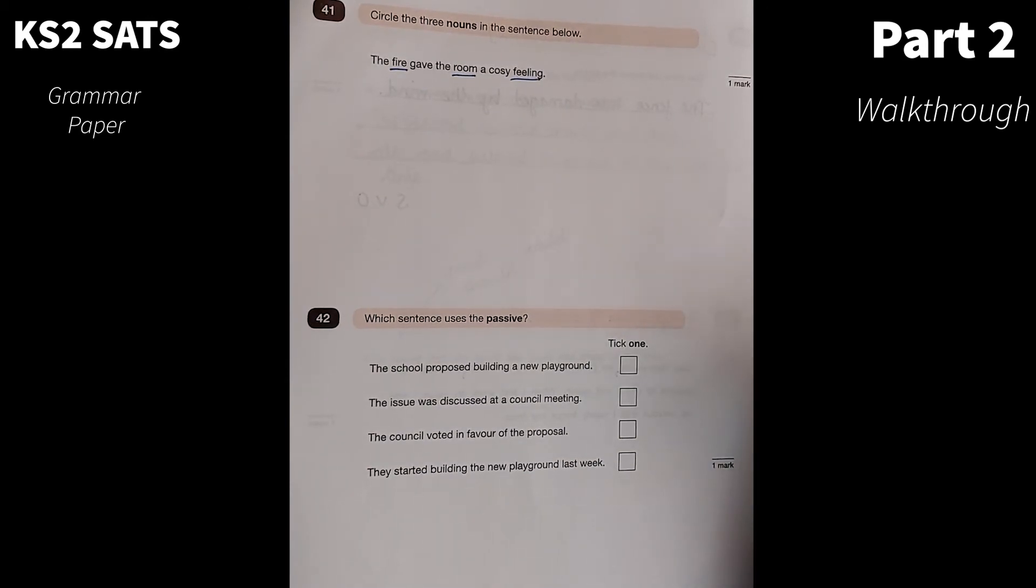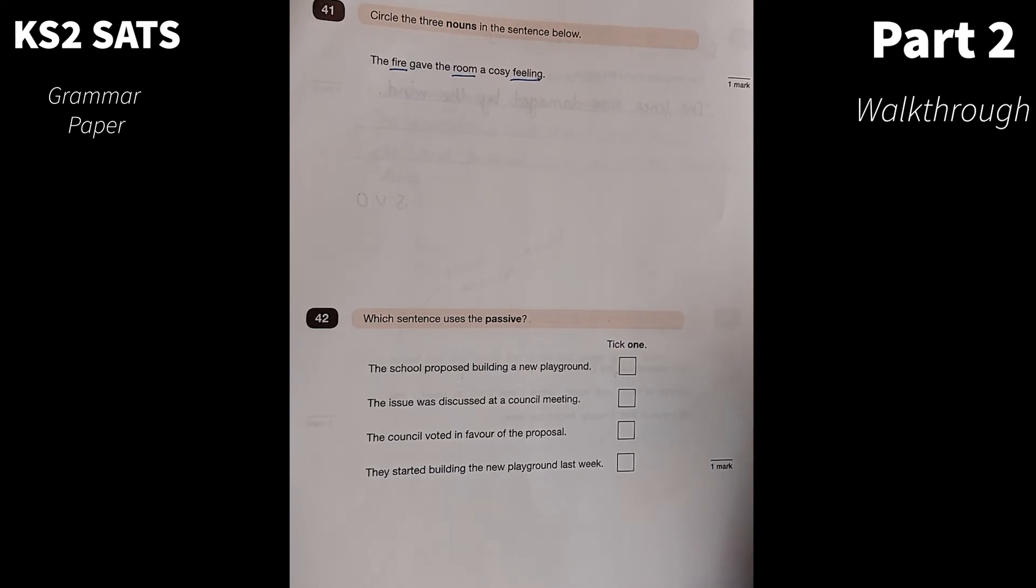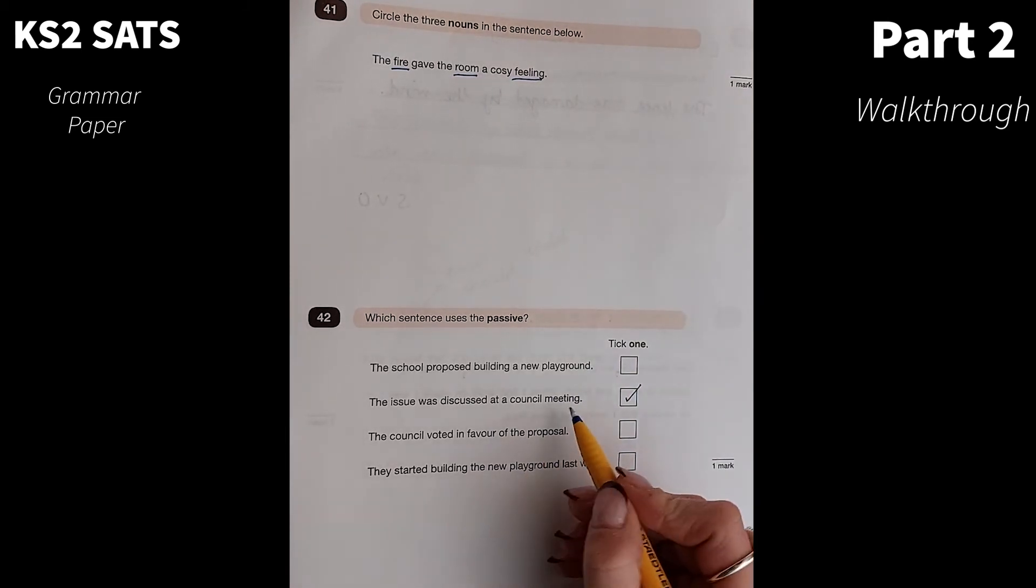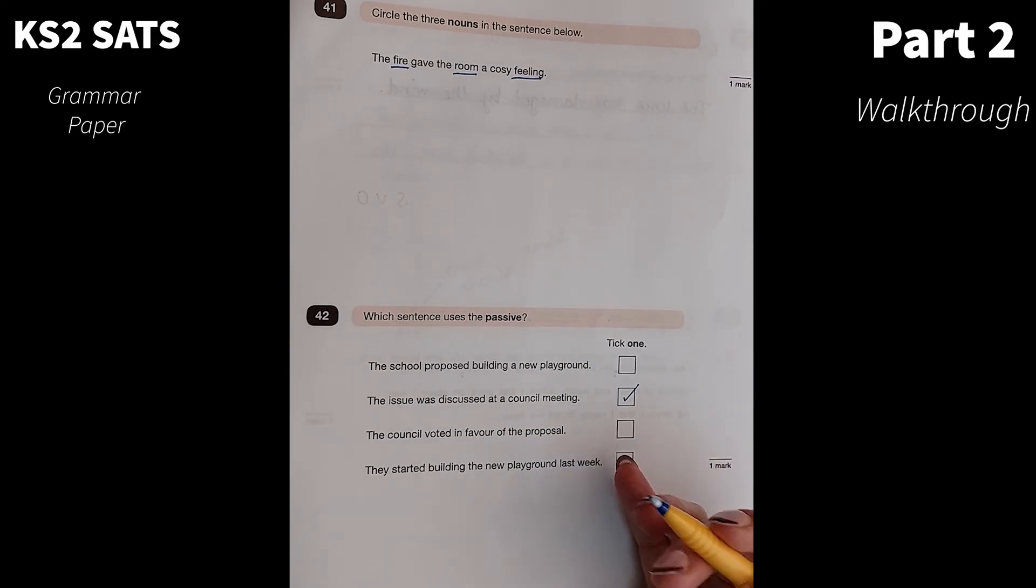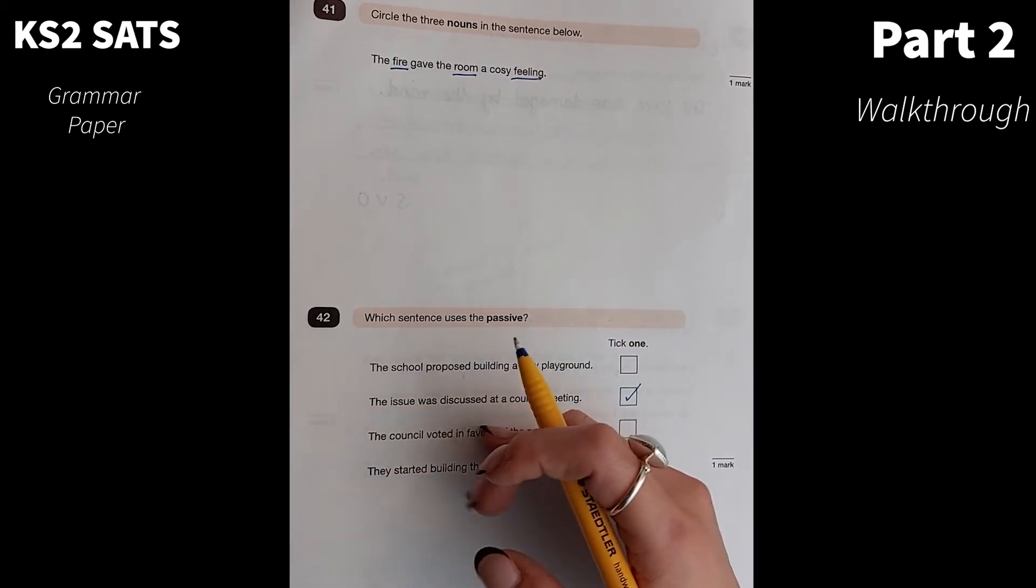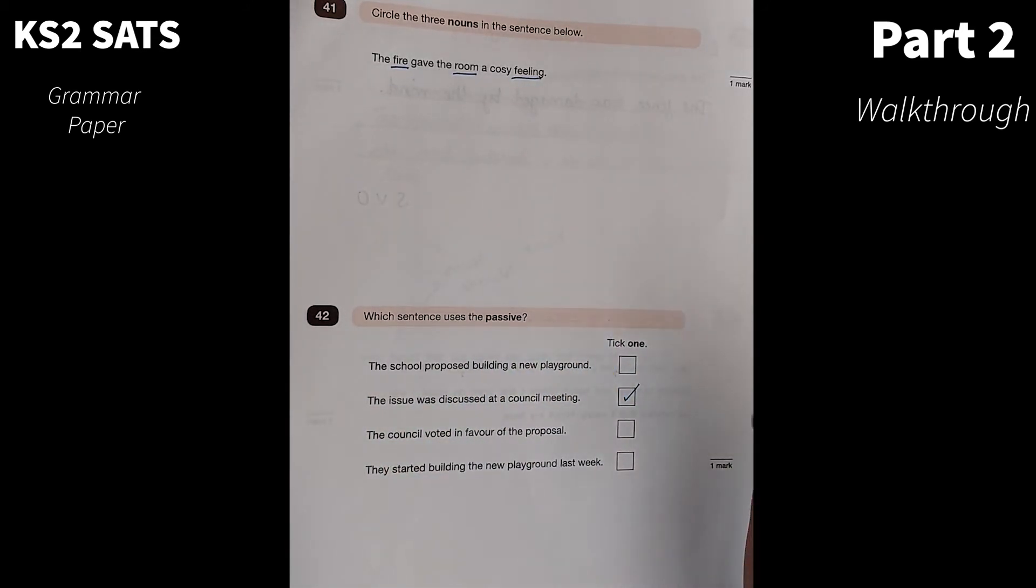Which sentence uses the passive? The school proposed building a new playground. The issue was discussed at a council meeting. The council voted in favour of the proposal. They started building a new playground last week. This one would be the issue was discussed at a council meeting. And I always think if you could add by something, I always say by a hundred storming elephants. If you can add that to the end of a sentence, then that's in the passive. So, the issue was discussed at a council meeting by a thousand storming elephants. Not that that would really be a sensible idea, but that tells me that that's in the passive.